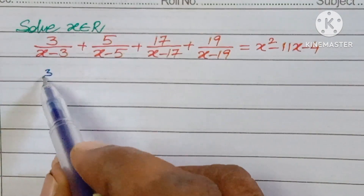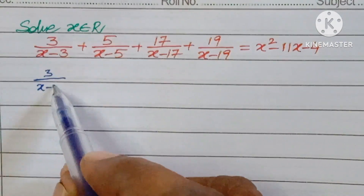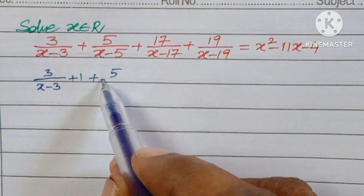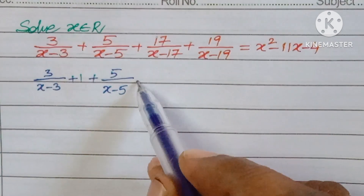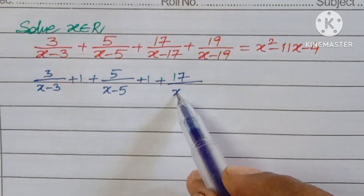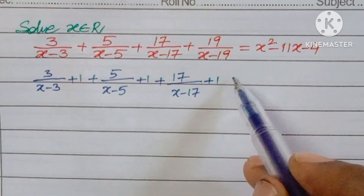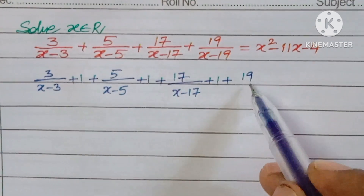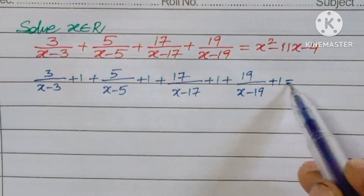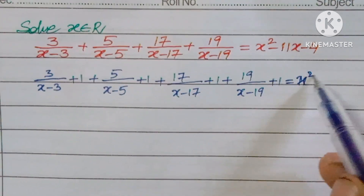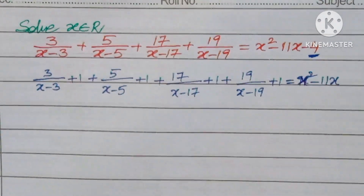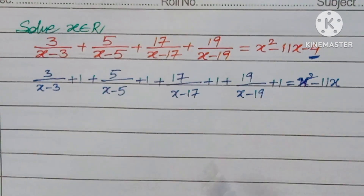The key step is to rewrite each fraction by adding 1: (x minus 3 plus 1) times 3, (x minus 5 plus 1) times 5, (x minus 17 plus 1) times 17, and (x minus 19 plus 1) times 19. The right-hand side x squared minus 11x minus 4 is adjusted by distributing the 4 as 1 plus 1 plus 1 plus 1.